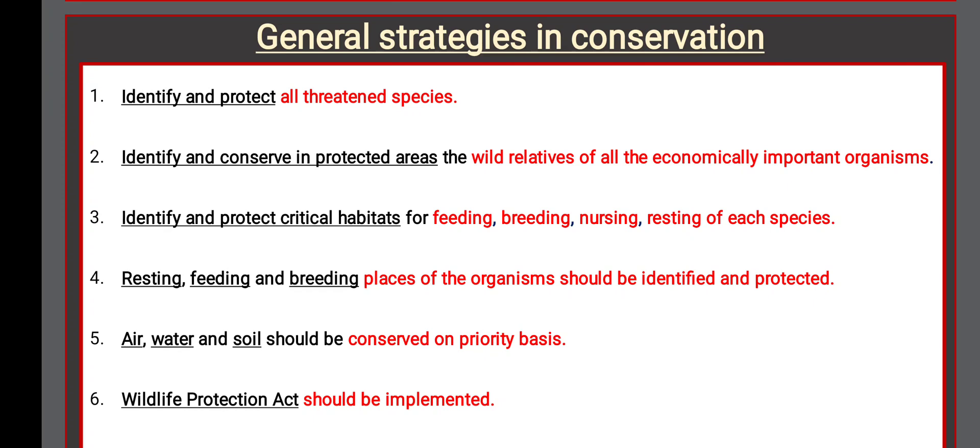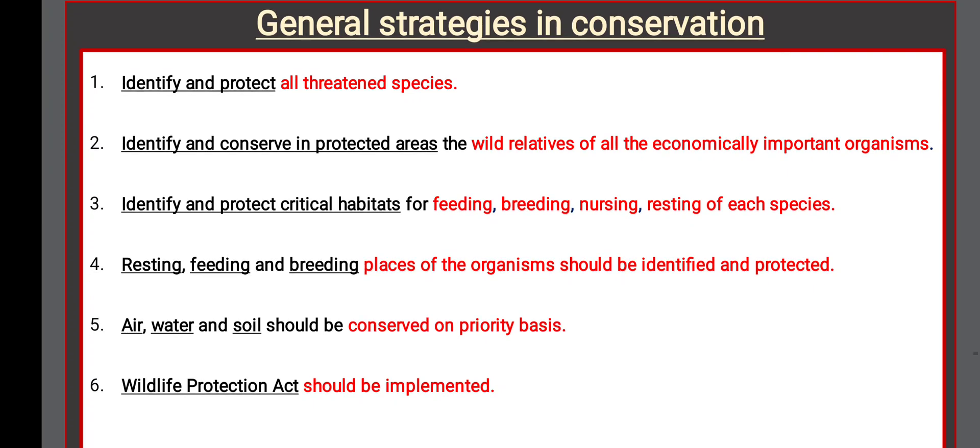General strategies in conservation include: identifying and protecting all threatened species; identifying and conserving in protected areas the wild relatives of all economically important organisms; identifying and protecting critical habitats for feeding, breeding, nursing, and resting of each species; conserving air, water, and soil on a priority basis; and implementing the Wildlife Protection Act.